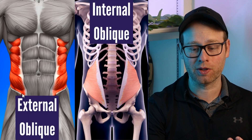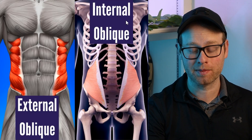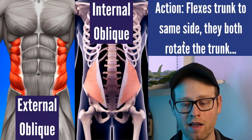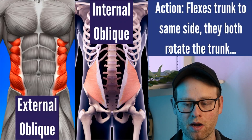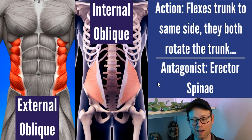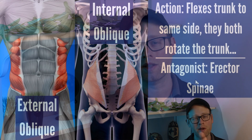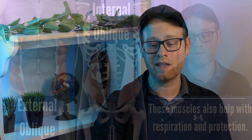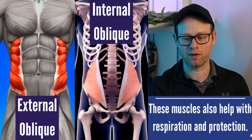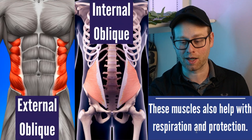Next up, we're talking about the external and internal obliques. They both flex the trunk to the same side, and they also both rotate the trunk. Those erector spinae muscles would still be an antagonist here, along with other antagonist muscles. These muscles also help with respiration and protection — honestly, all core muscles help with respiration and protection.